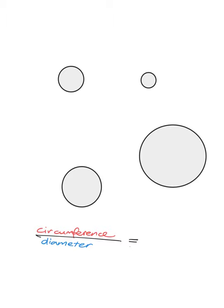An interesting thing that was discovered about circles a long, long time ago is the following: for any circle, if you measure the circumference — in other words, go all the way around the edge — and you divide it by the diameter, you are going to get an answer that is about 3.14. And what's really interesting is that this is the same no matter what circle you're talking about. Even if you're in a small circle, measure all the way around and divide by the diameter, you also get 3.14.